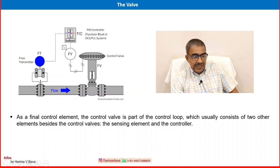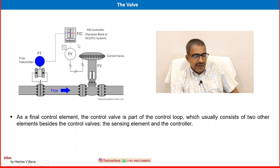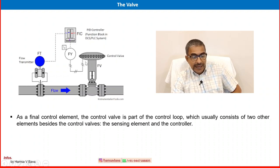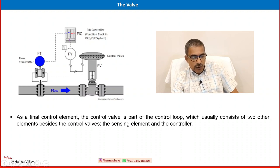The controller type shown here is a PID controller — proportional integral derivative — though we do not need to study that detail here. The controller output is electronic, and an I2P converter converts the electronic signal to a pneumatic signal, because most control valves operate on pneumatic signals — air is the driver of the control valve. Compressed air is provided through a positioner to the diaphragm or actuator, and the valve opens, closes, or throttles based on the instruction from the controller.